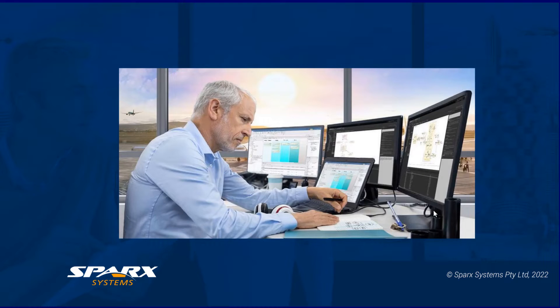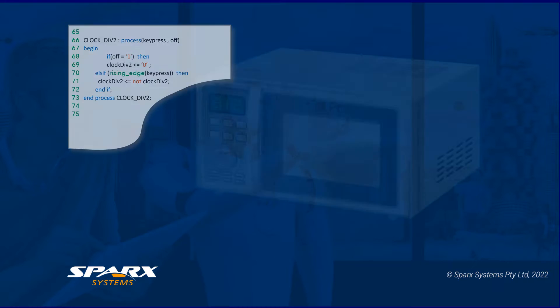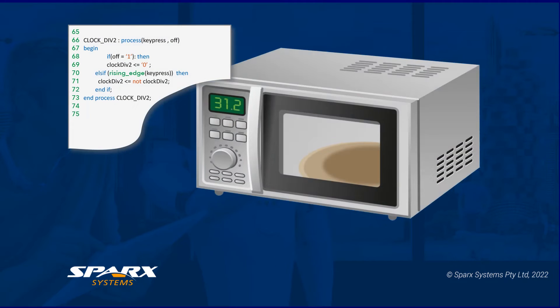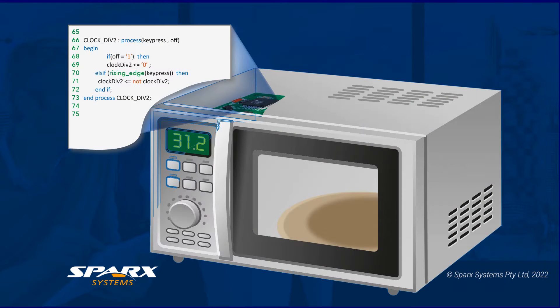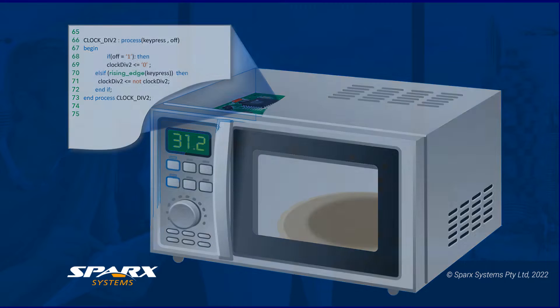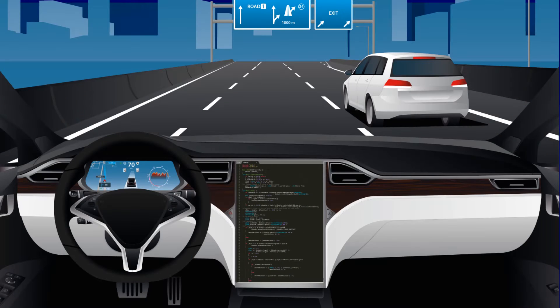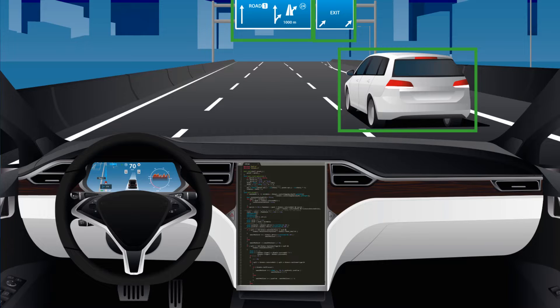These features can be used in a variety of environments ranging from high-end applications through to embedded code for automated machines, from simple devices through to components and complex units used in the automotive, maritime and aerospace industries. Note that these features do require the Unified or Ultimate edition of Enterprise Architect.